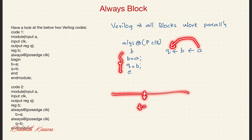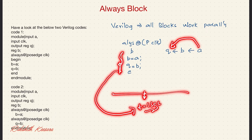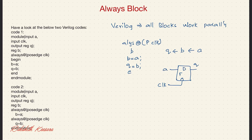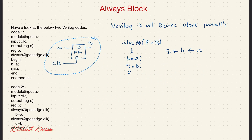Let's say t equals 1 second. All expressions are happening at the same time step t equal to 1 second. So here at the end the value of a is assigned to q. That's the reason we will be getting a normal flop — this is the output q, this is input a, and this is a D flip-flop. So this is the solution for the first code.